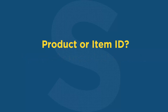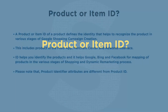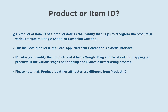What is product or item ID? A product or item ID defines the identity that helps to recognize the product in various stages of Google Shopping campaign creation. This includes the product in the Feed app, Merchant Center, and AdWords interface. The ID helps you identify products and helps Google, Bing, and Facebook for mapping of products in the various stages of shopping and dynamic remarketing.